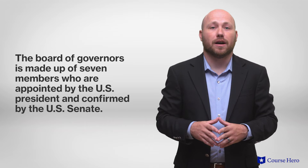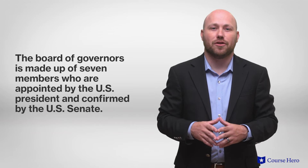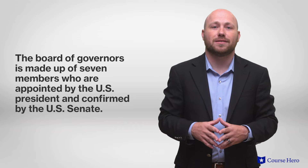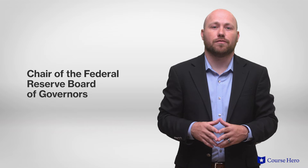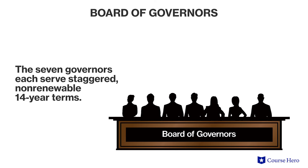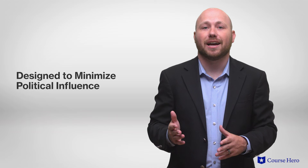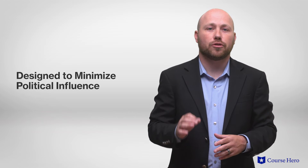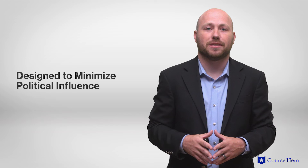The Fed is run by its Board of Governors, which consists of seven members appointed by the President of the United States and confirmed by the U.S. Senate. One member is named the Chair of the Federal Reserve Board of Governors. The Federal Reserve determines price stabilization and other monetary policies, which often reflect the philosophy of the Chair. The seven members each serve staggered, non-renewable 14-year terms, designed to minimize any political influence. The Fed was created to be independent in setting monetary policy.